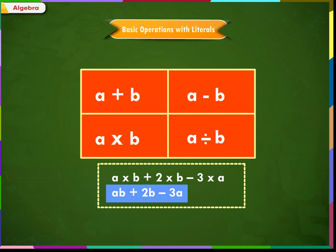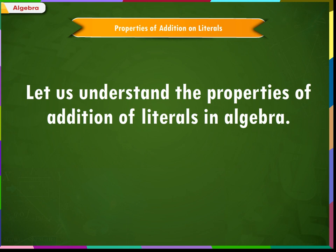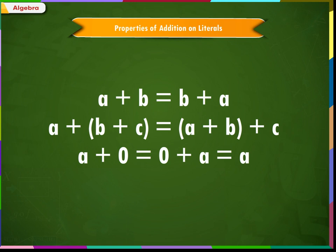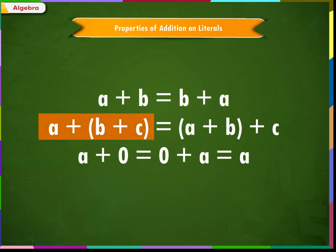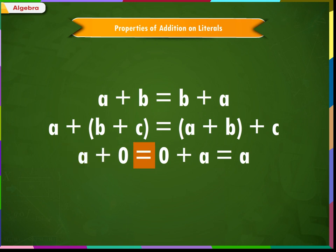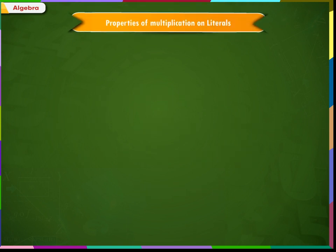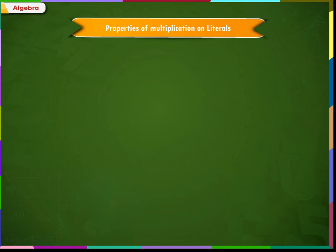This looks simpler. Let us understand the properties of addition of literals in algebra. Like numbers, the addition of literals has the following properties: A plus B is equal to B plus A; A plus B plus C is equal to A plus B plus C; A plus 0 is equal to 0 plus A is equal to A. However, subtraction of literals does not have these properties. The only property that holds true for subtraction is A minus 0 is equal to A.